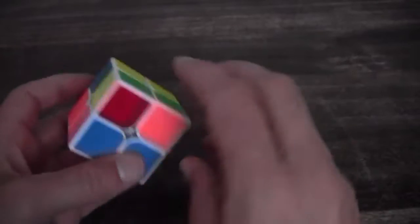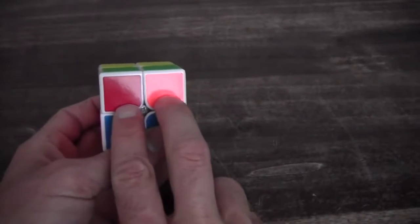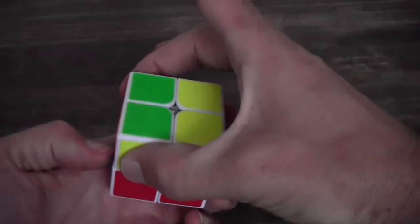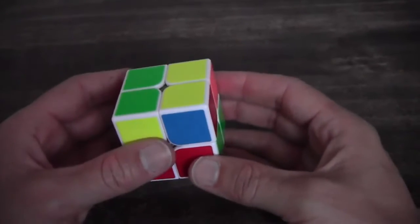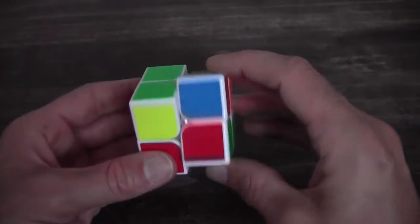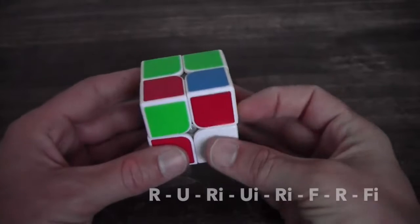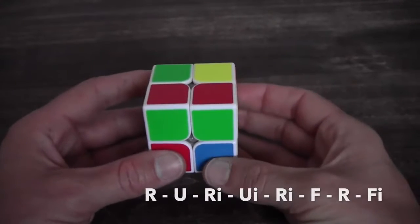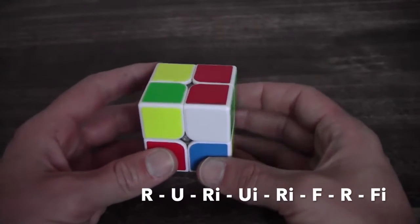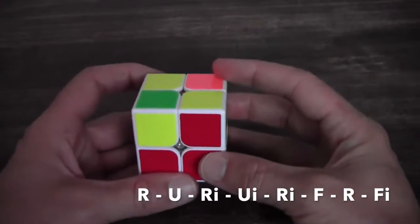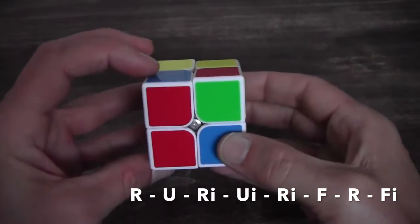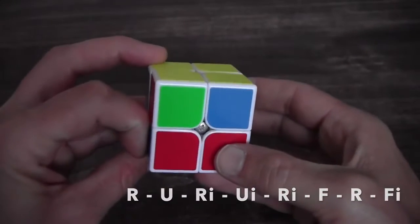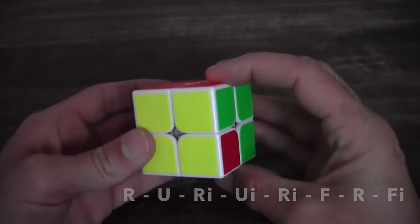If you have a block but not two of them positioned in the front but they are on the side, you can hold your cube like this and perform the following algorithm: R U R inverse U inverse R inverse F R F inverse and you solved it.